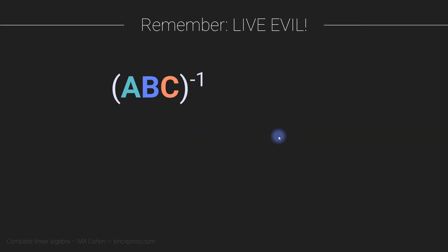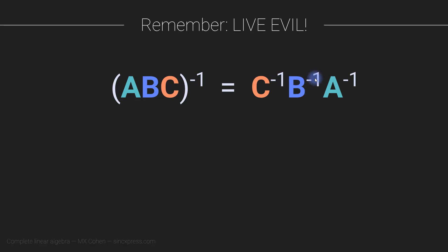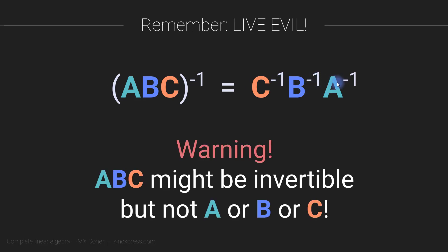This slide is a reminder about the LIVE/EVIL rule — 'live' spelled backwards is 'evil.' The inverse of a product A times B times C equals C inverse times B inverse times A inverse. Be careful here: it's possible that the product ABC has an inverse even if the individual matrices A, B, and C do not have inverses. You will see examples of this in later sections.